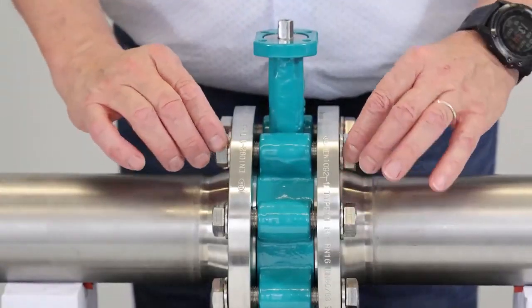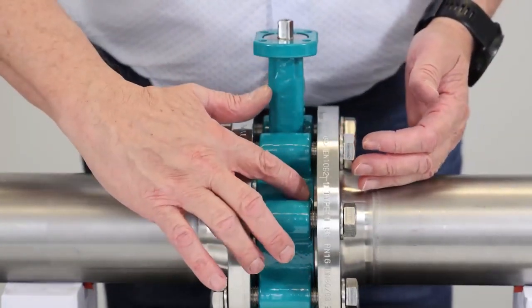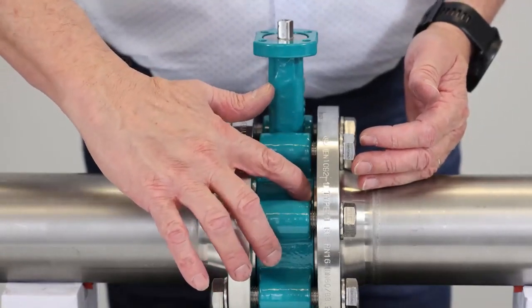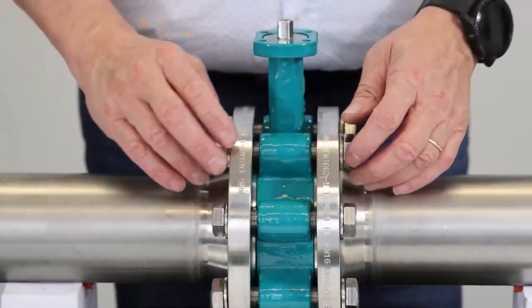It is important to tighten the flange screws until the body flanging surface touches the flange surface. Only then we can be sure that the valve is tight at the flanges.